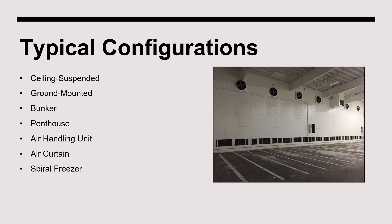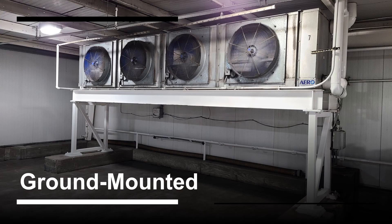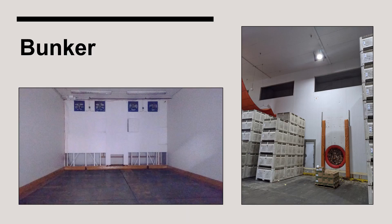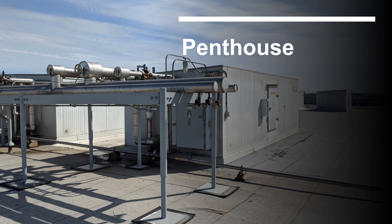There are many different types and configurations of air cooling evaporators. One common configuration is the ceiling suspended evaporator, which is mounted to the roof support beams using threaded rods and nuts. Ground-mounted evaporators rest on a support structure that is fastened to the concrete foundation. A bunker evaporator is a unique type of air cooling evaporator that is mounted behind a bunker wall so that you cannot see the unit unless you gain access to the bunker.